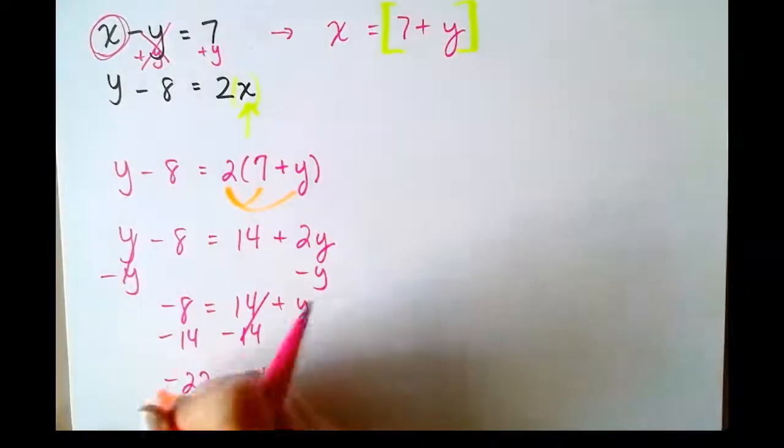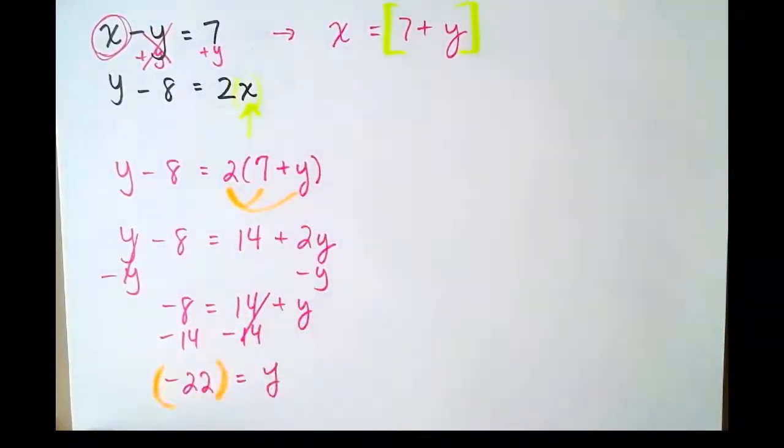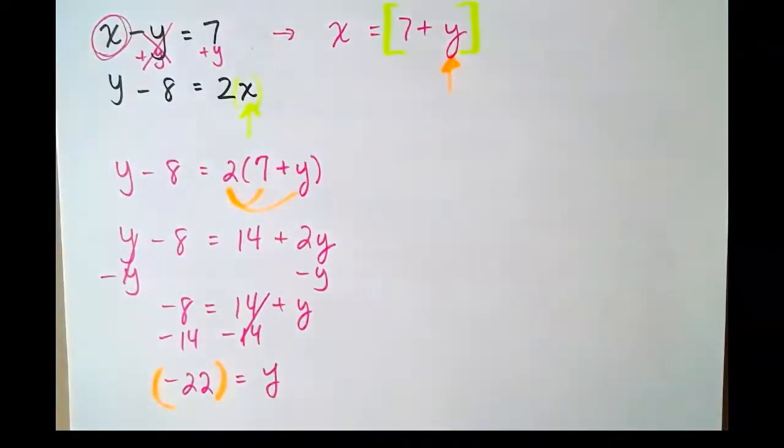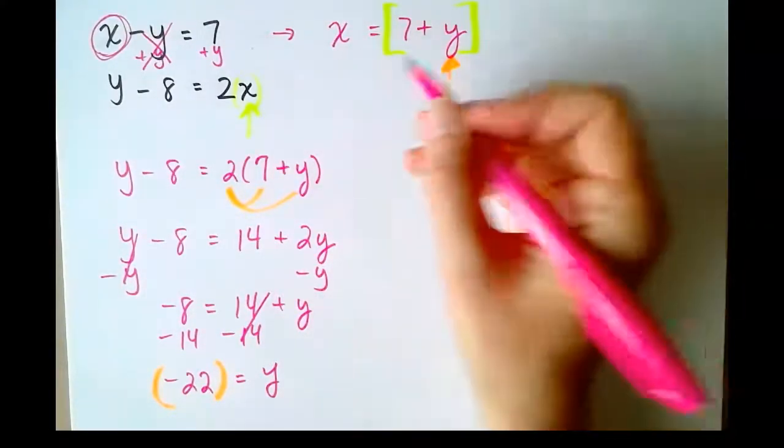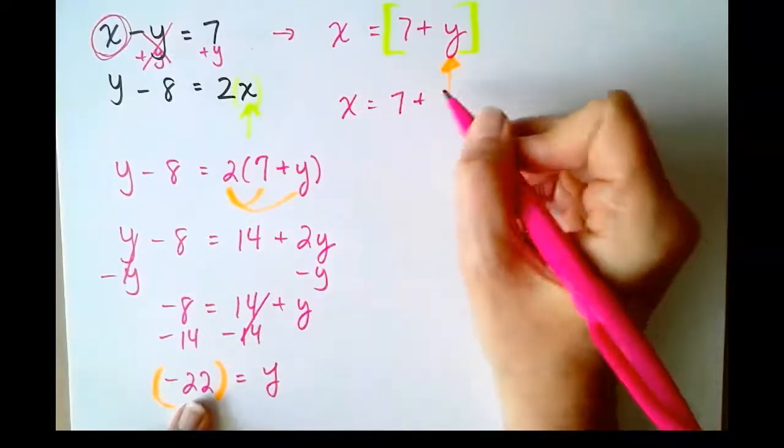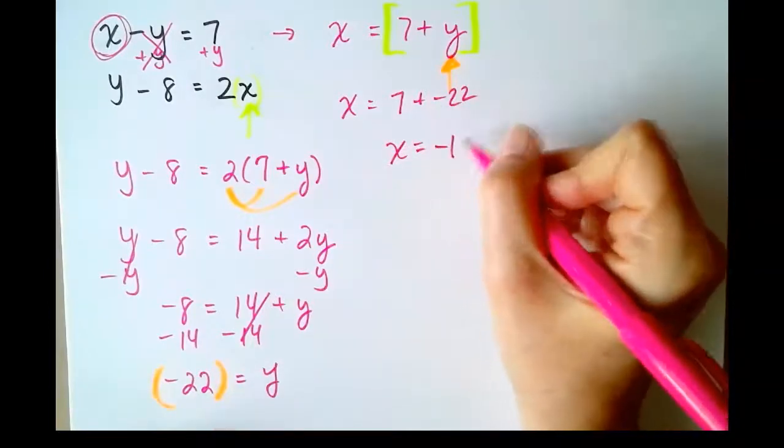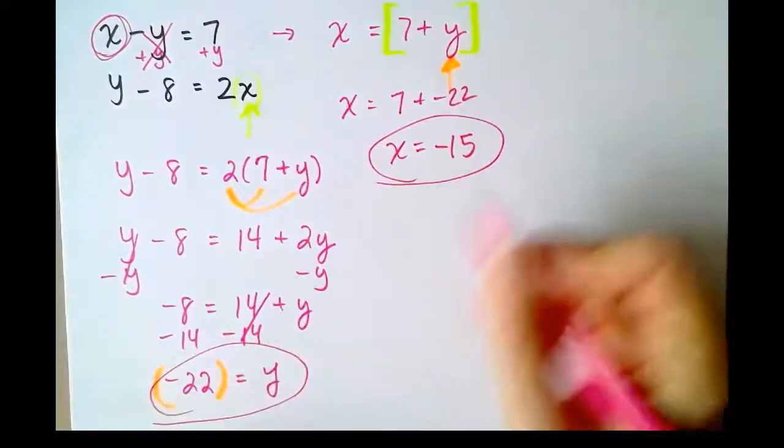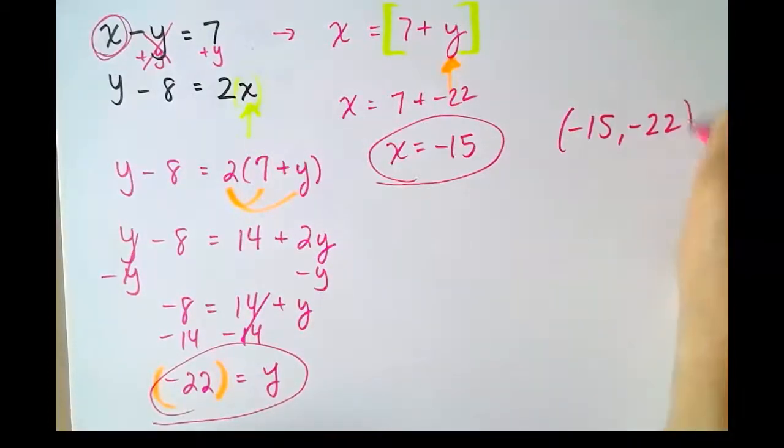So now that we know y, the y value is -22, we can plug it in pretty much anywhere, because now we need to solve for x. Probably the easiest place is here, because the x is already isolated. So x = 7 + y, which is -22. And 7 plus -22 is -15. There's our y. Excuse me. There's our x. There's our y. So our answer is -15, -22.